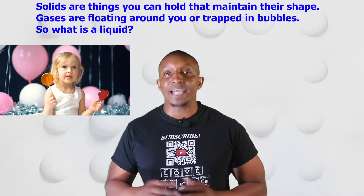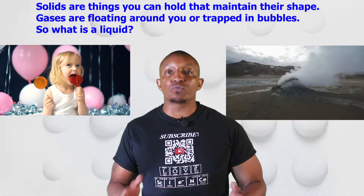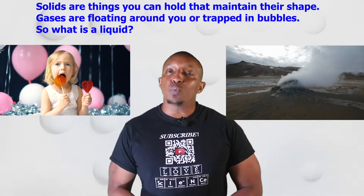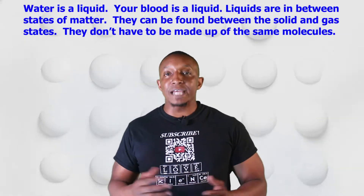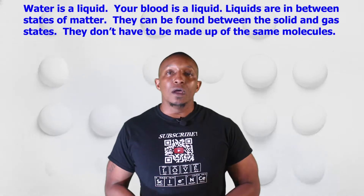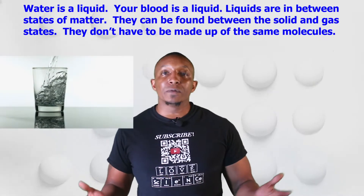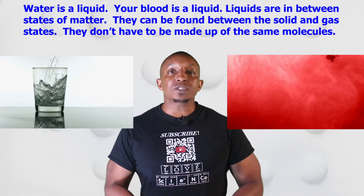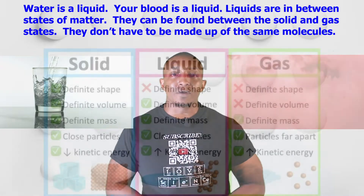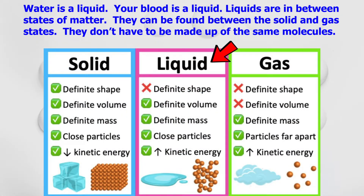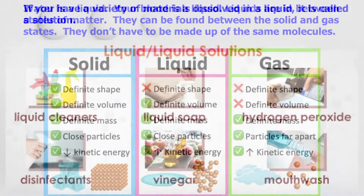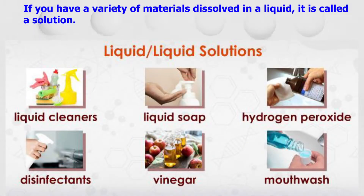The second state of matter we will discuss is a liquid. Solids are things you can hold that maintain their shape. Gases are floating around you or trapped in bubbles. So what is a liquid? Well, water is a liquid, your blood is a liquid, and liquids are in-between states of matter — found between the solid and gas states. They don't have to be made up of the same molecules. If you have a variety of materials dissolved in a liquid, it is called a solution.